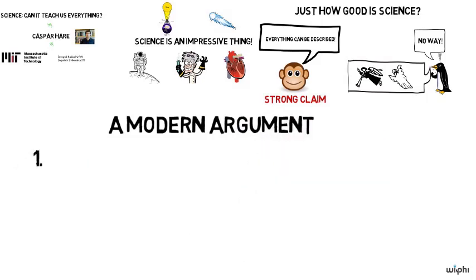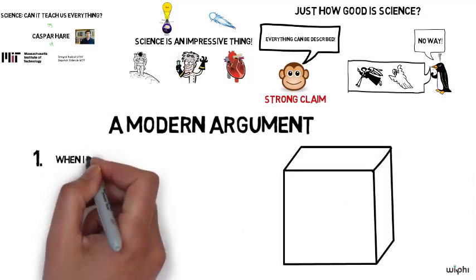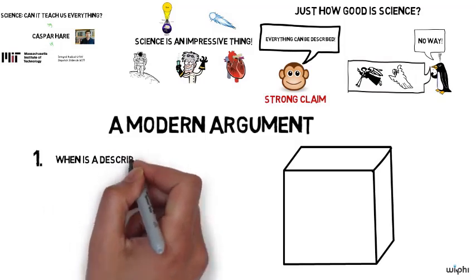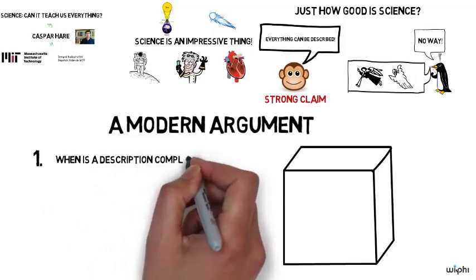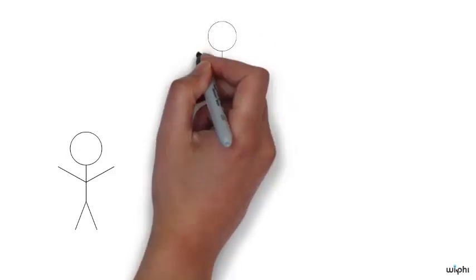Our first job is to explain what it is for a description of an aspect of reality to be complete. We'll do this by way of an example. Here's a description of what's going on in a room. It happens to be this room. There are three people in the room. End of description.